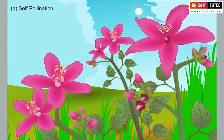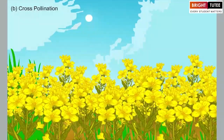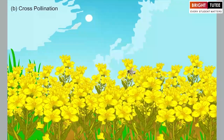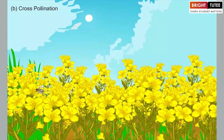Self-pollination can occur in bisexual flowers which contain both the anther and the stigma. Cross-pollination is the transfer of pollen grains from the anther of one plant to the stigma of a flower of another plant of the same species. It brings about variation in the offspring because two different plants with different genetic variations are involved. Cross-pollination can occur in both unisexual and bisexual flowers.